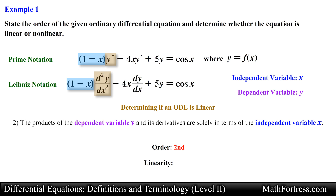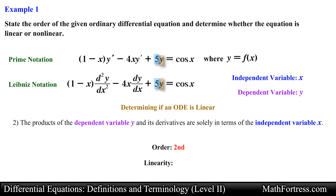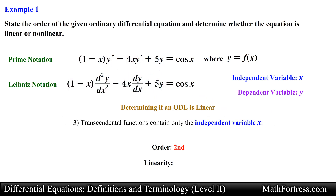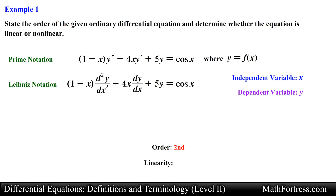The product of the second derivative is the quantity (1 minus x), which is solely in terms of the independent variable x. The product of the first derivative is also in terms of x, and the dependent variable y contains the constant 5. If any of these expressions contained the dependent variable y or its derivatives, the ODE would be nonlinear. Lastly, check for transcendental functions such as trigonometric, exponential, and logarithmic functions, and make sure they contain only the independent variable x. Here we have a cosine of x term whose argument contains x. If it contained y, this ODE would be nonlinear. Since all three criteria are met, this ODE is linear in form.